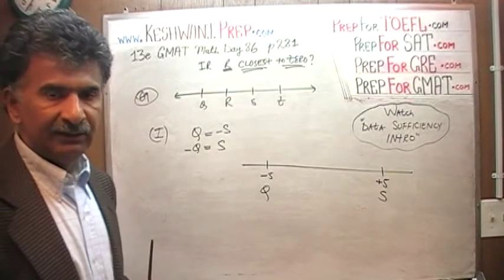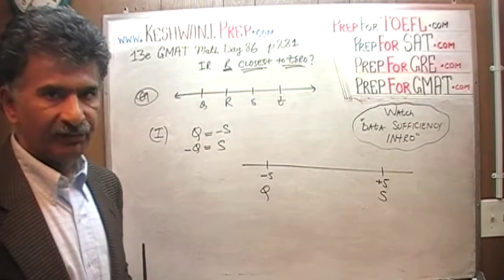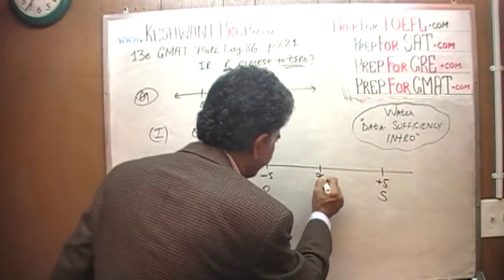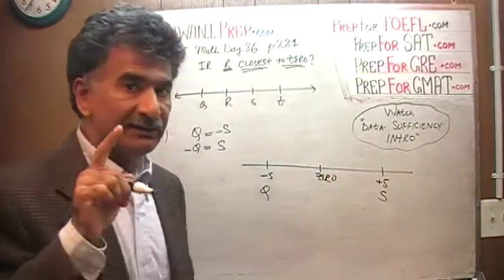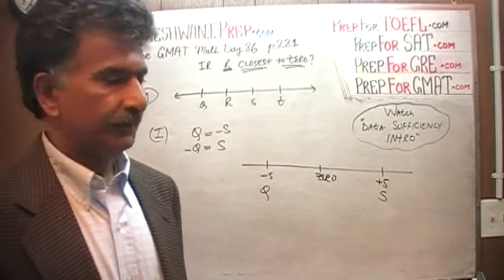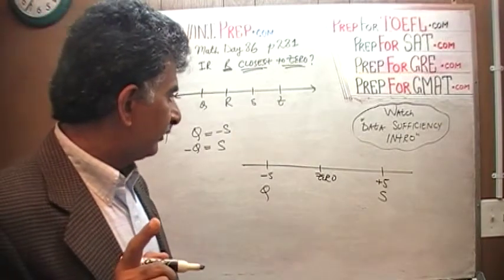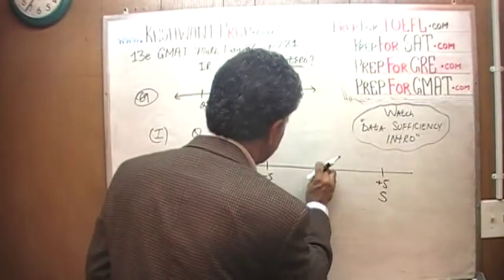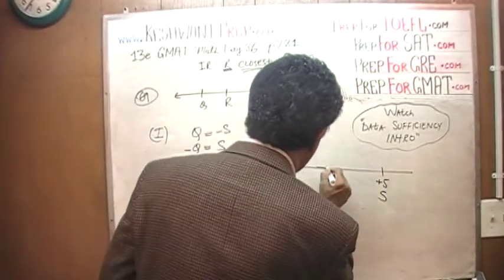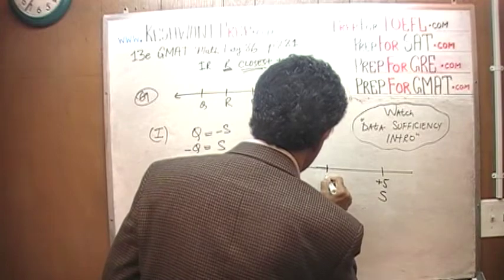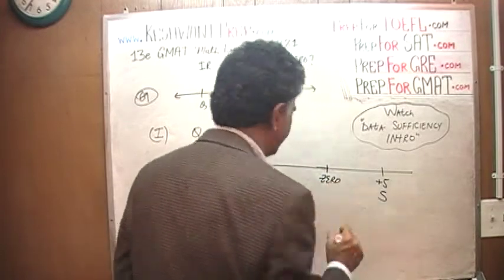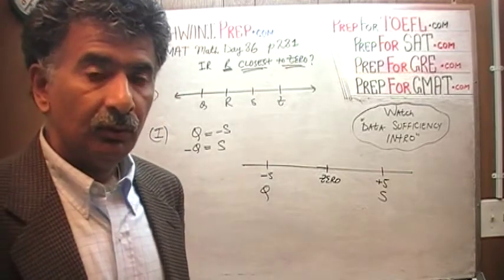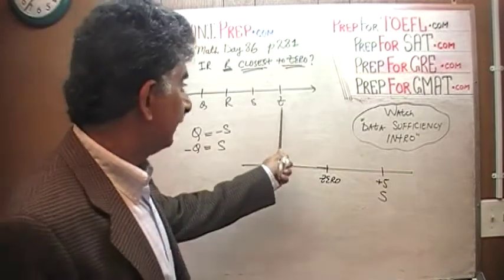Q equals negative S or S equals negative Q. What that means, what this implies, what this tells us is that the midpoint of Q and S is zero. That's what they are telling us. Zero lies right smack in the middle. Now we are interested in where R lies.